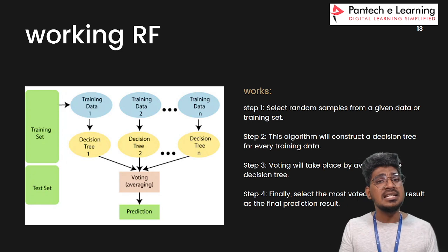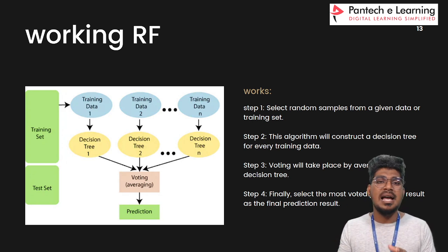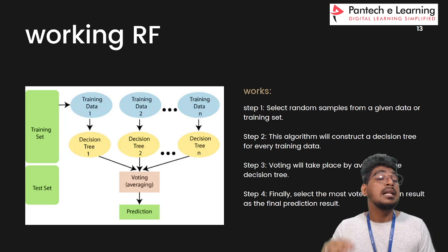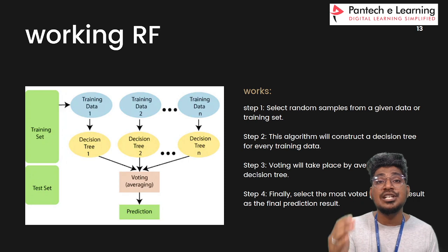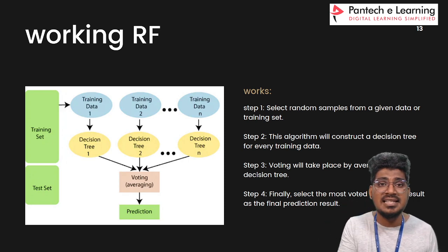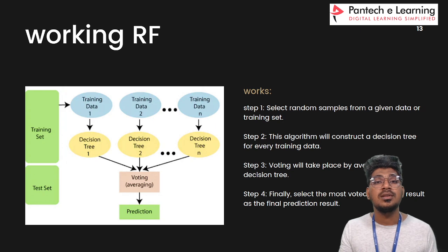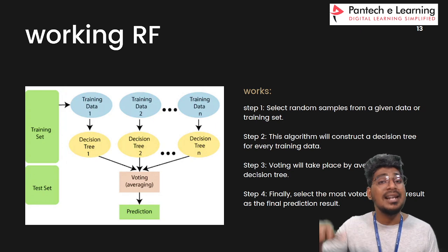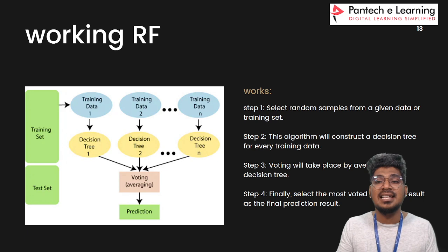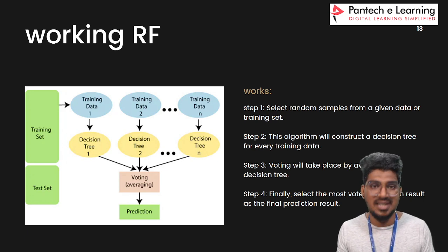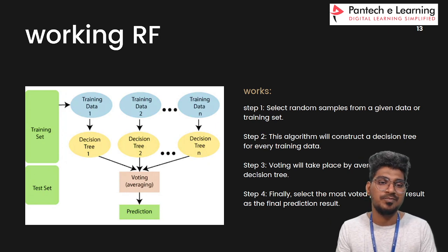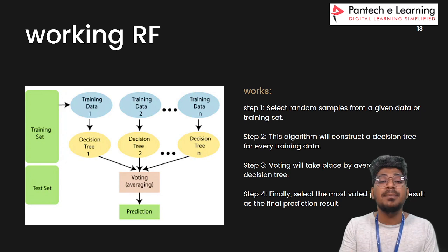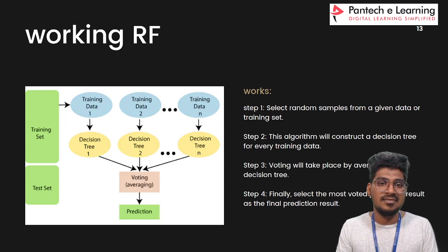If you apply 100 decision trees and 80 percent give the result yes, what is the majority vote? The 80 percent vote for yes, so the prediction is yes — the rain will fall. That is the prediction based on voting and average. This is the way it works.